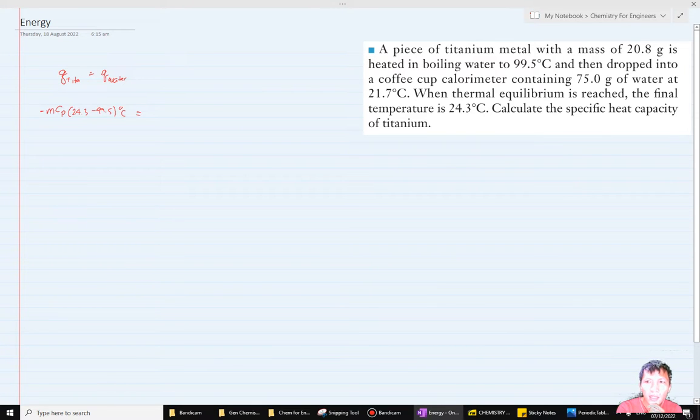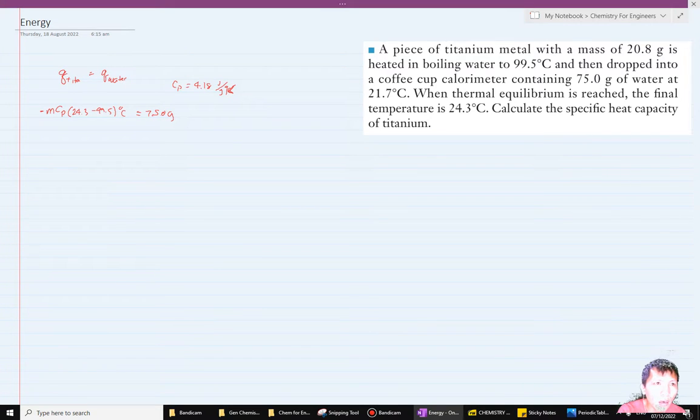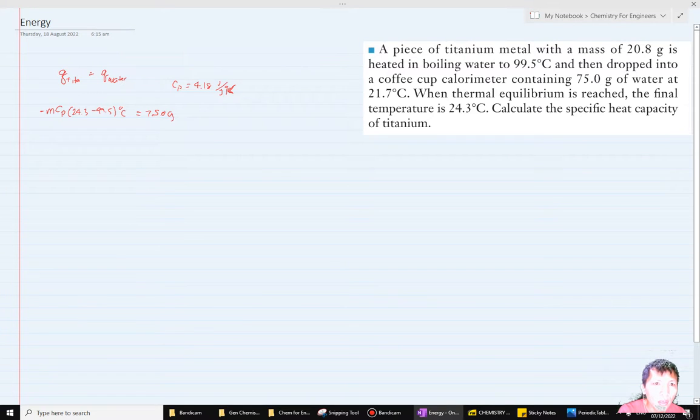This equals the heat absorbed by water, which is the mass of water - 75.0 grams - times the Cp of water. From the book, the Cp of water is 4.18 joules per gram degree Celsius.